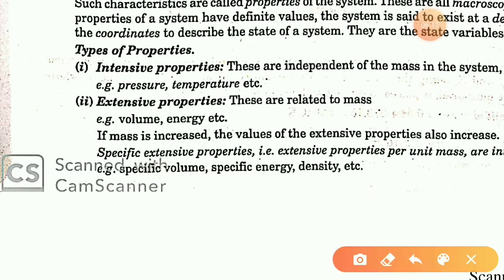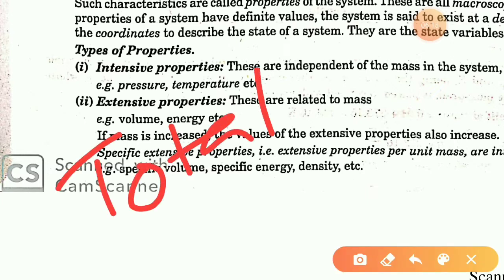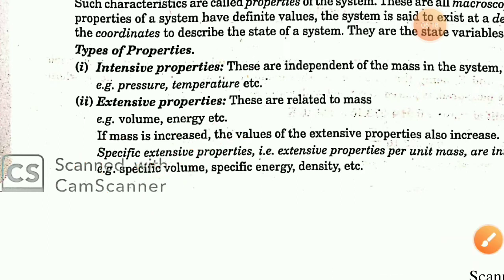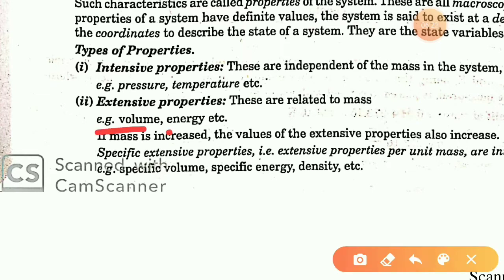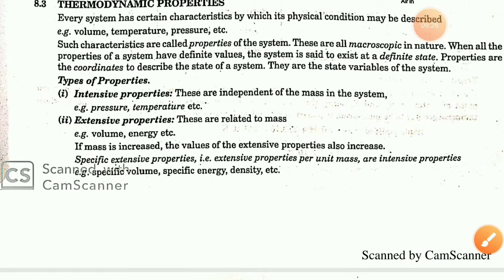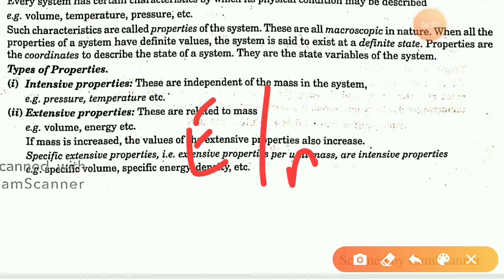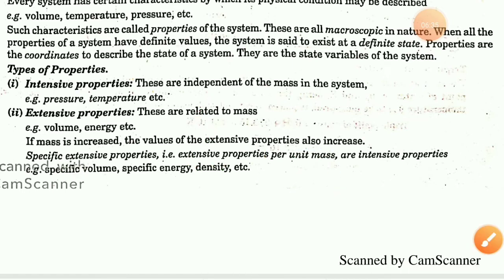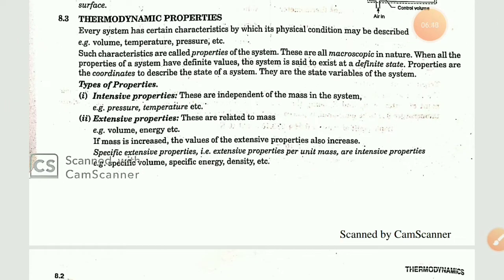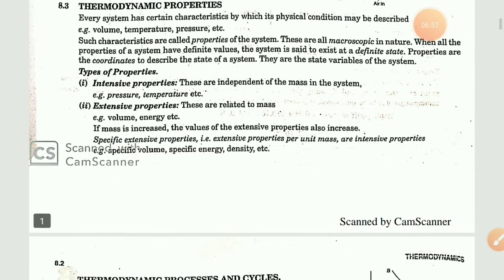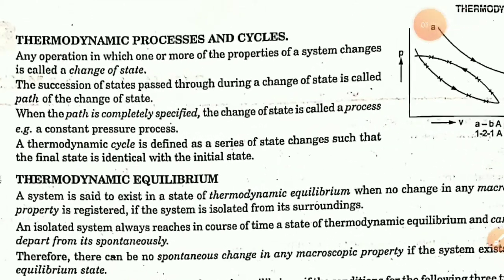Extensive properties include total volume, total energy, and total mass. When you add the word 'total,' it is an extensive property. When we divide an extensive property by unit mass, we get the intensive property — for example, energy per unit mass. So the intensive property is independent of mass, while the extensive property is dependent on mass.